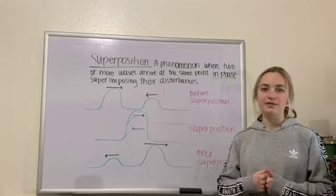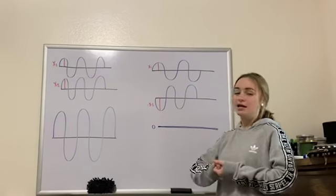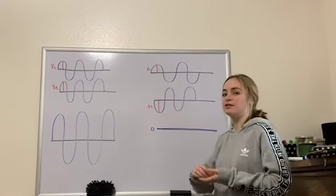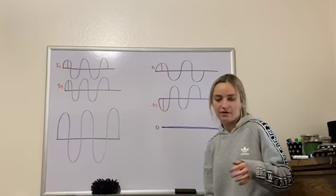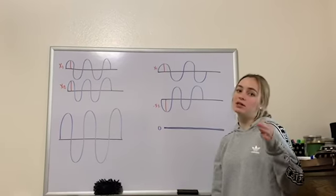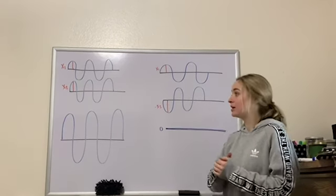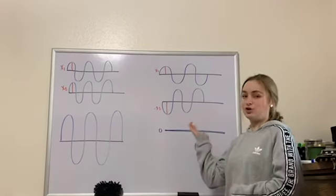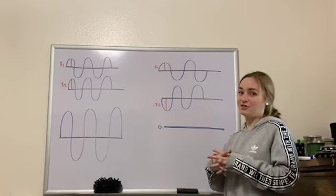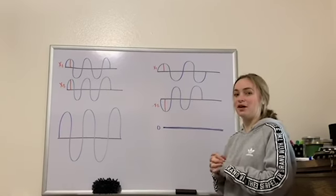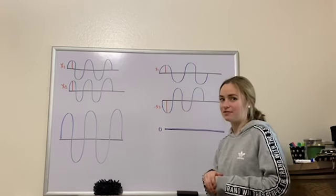Superposition creates either constructive interference or destructive interference. This requires the waves to be perfectly aligned. I drew two pictures here — pause this video and see if you can guess which one is constructive and which one is destructive.